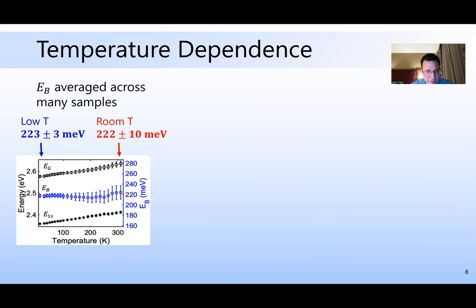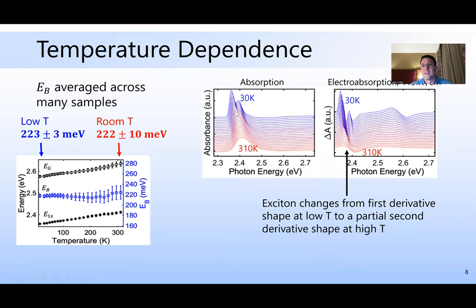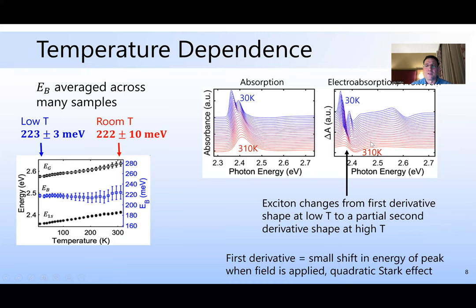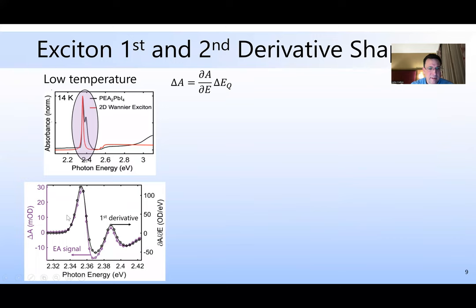If you look at the shape of the temperature dependence, as temperature increases, it broadens both the absorption and the electroabsorption. And the electroabsorption actually changes shape a little bit from a first derivative type line shape more to a second derivative type line shape. A first derivative shape is what you'd expect if you have a peak that then shifts a little bit in energy when the field is applied, and then you subtract the two. So that is expected for the quadratic stark effect. And if you look at that derivative shape, that's what I've plotted here. So on the left is the EA signal, on the right is the derivative, and there's a pretty good match between the two. The first derivative is part of the quadratic stark effect. And if you look at that stark effect, it allows you to obtain a value for the Bohr radius.